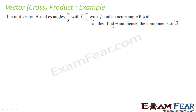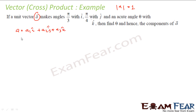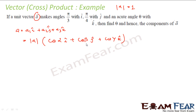The next question: if a unit vector A (magnitude of A is 1) makes angle π/3 with i, π/4 with j, and some acute angle θ with k, find the angle θ. We write A as A1 i + A2 j + A3 k, which equals |A|(cos α i + cos β j + cos γ k), where α, β, γ are the angles with the x, y, and z axes respectively.